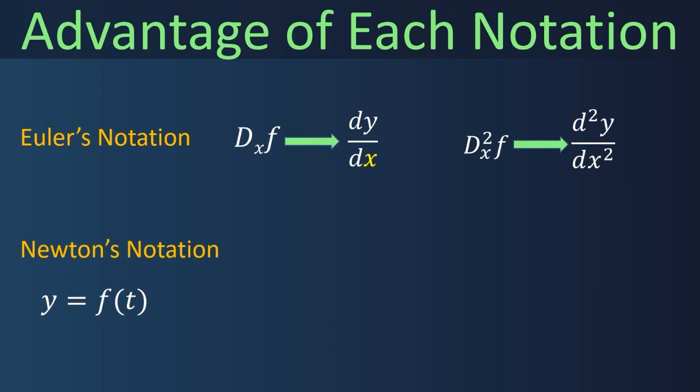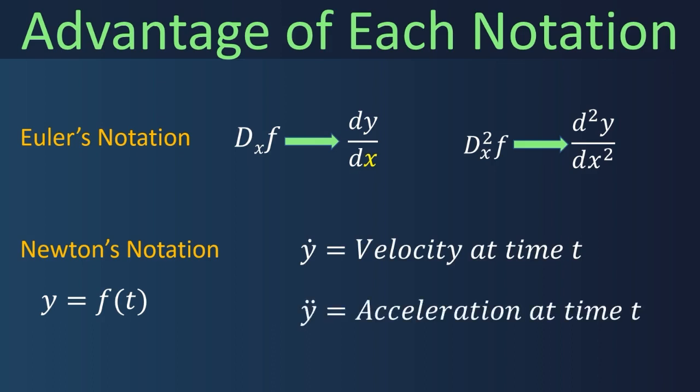Newton's notation is generally used when the independent variable denotes time. If location y is a function of t, then a single dot over y denotes velocity and double dots over y denote acceleration. This notation is popular in physics and mathematical physics.